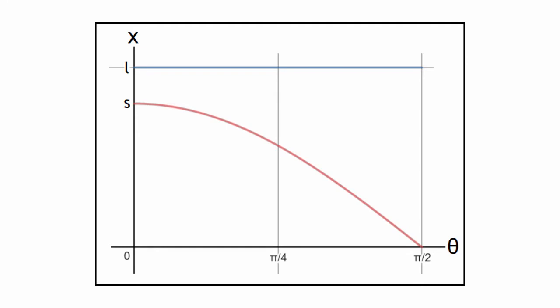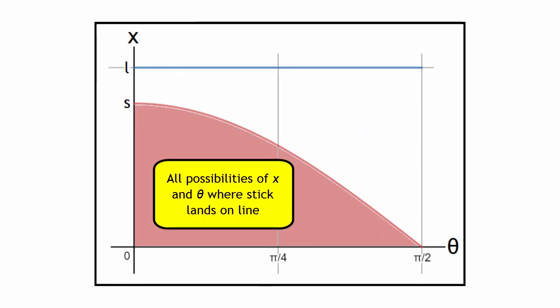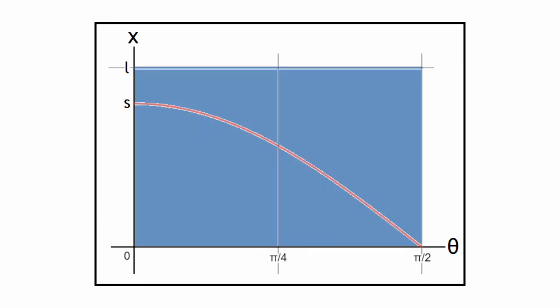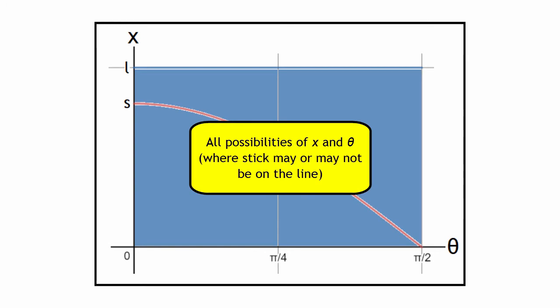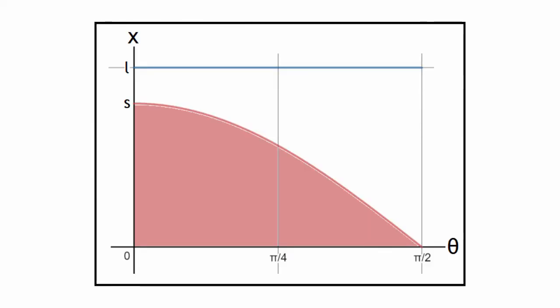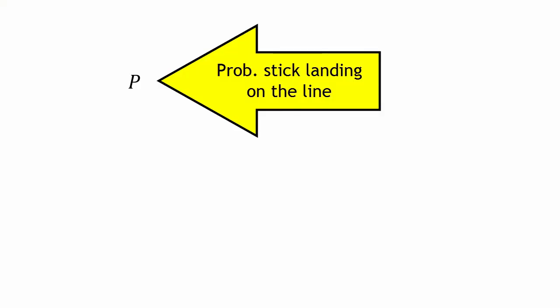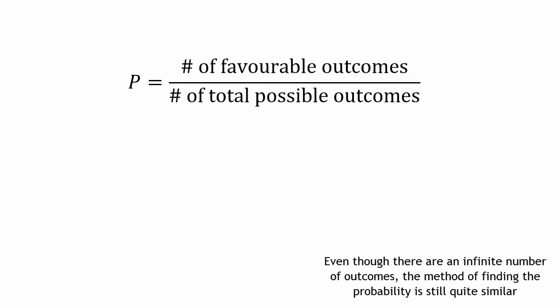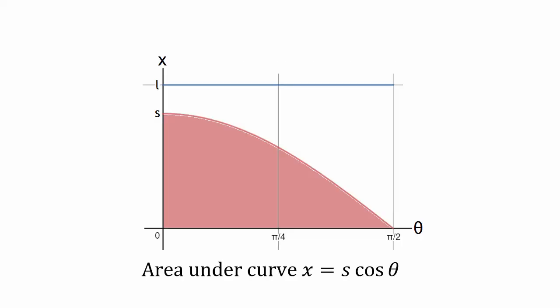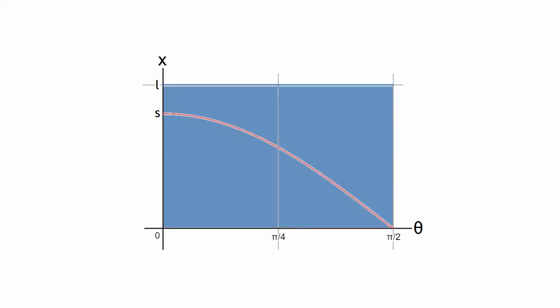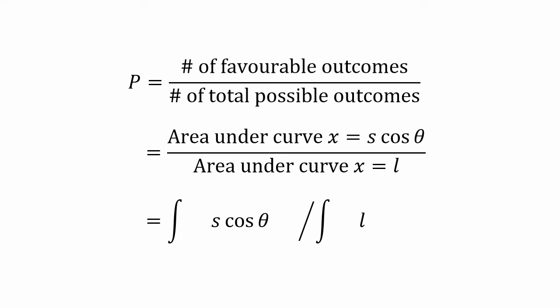The area under the graph of s·cos(theta) represents the favorable outcomes, and the area of the outer rectangle represents all total outcomes. To find the probability, we divide these two areas. To find the area under these curves, we need to use a bit of calculus — specifically integration.